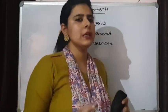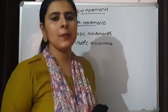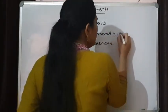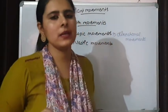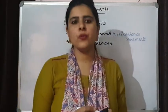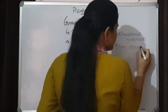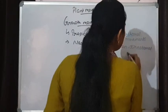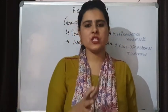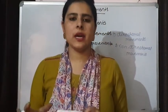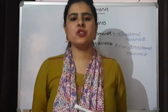Tropic movement simply means that the direction of stimulus is affecting the direction of movement of the plant. Tropic movements are directional movements — they depend on the direction of the stimulus. Nastic movements, on the other hand, are non-directional movements. We call them non-directional because the direction of stimulus does not affect the direction of plant movement. If I change the direction of the stimulus, it has no effect on the direction of the plant's movement — the direction remains the same. So here stimulus is not affecting the direction of movement.